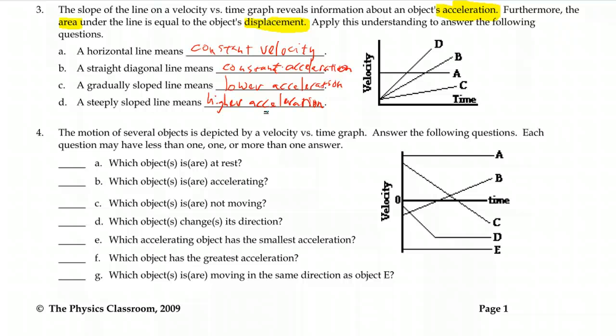We want to look for which ones are at rest. It doesn't say at rest the whole time, it just says at rest. So let's go for any that are at rest at any time. The rest position is the zero velocity line.